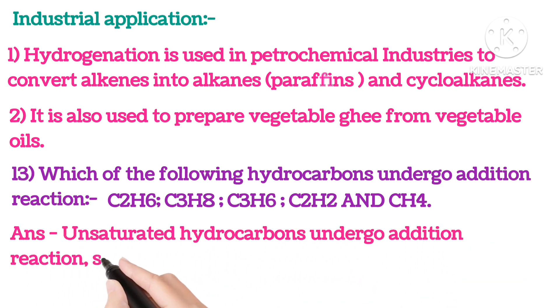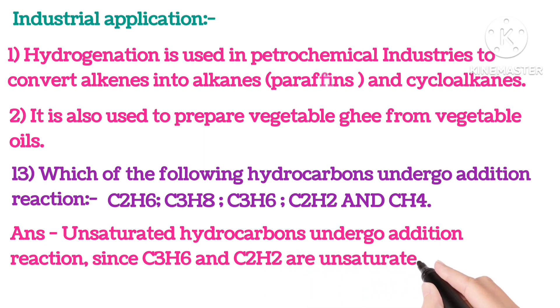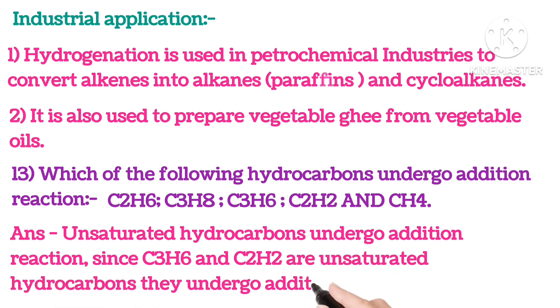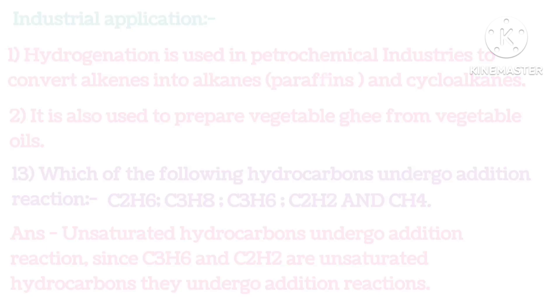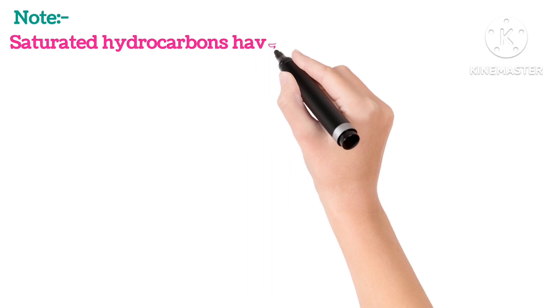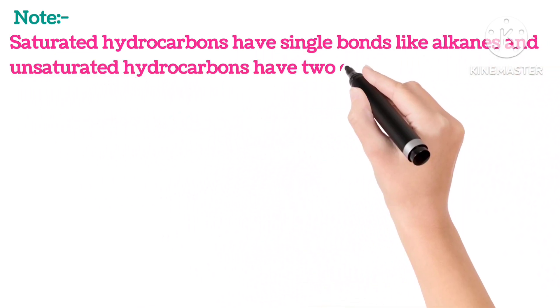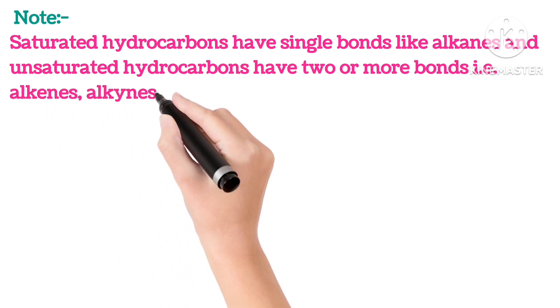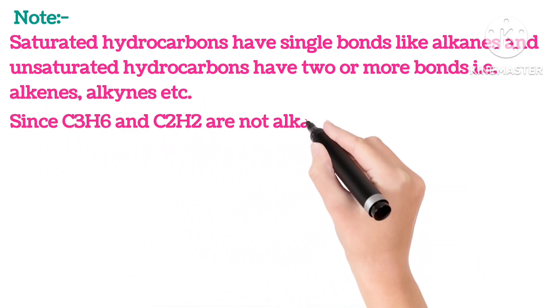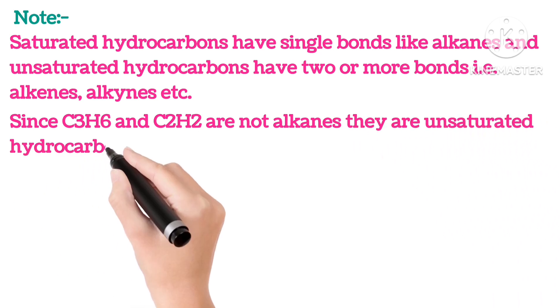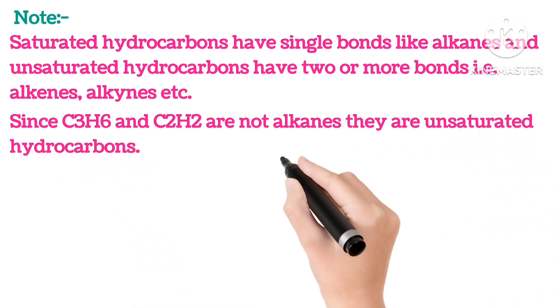Unsaturated hydrocarbons undergo addition reaction. Since C3H6 and C2H2 are unsaturated hydrocarbons, they undergo addition reaction. Note, saturated hydrocarbons have single bonds like alkanes, and unsaturated hydrocarbons have two or more bonds like alkenes and alkynes. Since C3H6 and C2H2 are not alkanes, they are unsaturated hydrocarbons.